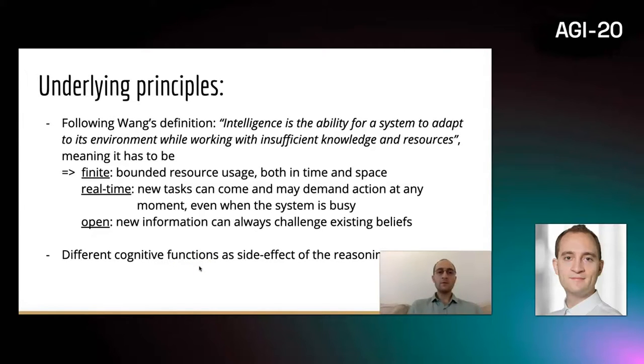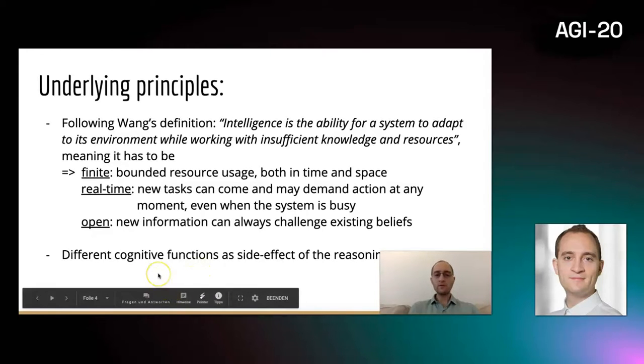The underlying principles follow Wang's idea that intelligence is the ability for a system to adapt to its environment while working with insufficient knowledge and resources. The system has to work with finite resource constraints, in real-time as new information constantly streams in. Also, the system has to be open in the sense that existing beliefs can be challenged by new experience.